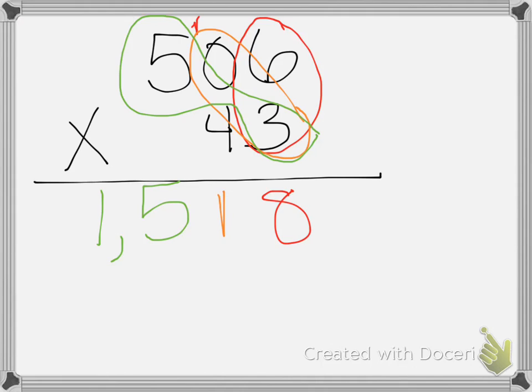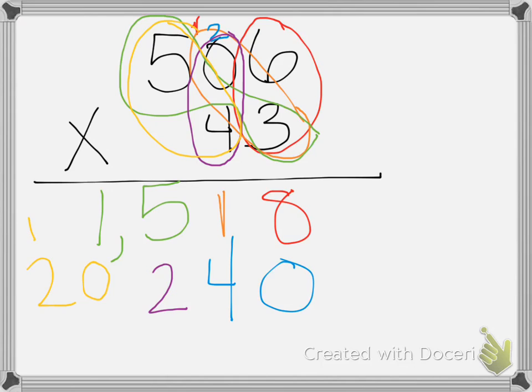Then I start all over again. Zero to mark my spot because I'm not doing my ones from the 43 anymore. I'm done with that. 4 times 6 is 24. There's my 4, carry the 2. Above the 0, you need to do 0 times 4. Plus the 2 is just a 2. Last but not least, 5 times 4, that's 20. Now I need to add them. 8 plus 0 is 8, 1 plus 4 is 5, 5 plus 2 is 7, 1 plus 0 is 1 and 2. My answer is 21,758.